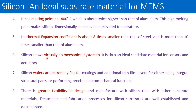Silicon also shows virtually no mechanical hysteresis, which means we can manufacture sensors and actuators reliably. Silicon wafers are extremely flat, which is ideal for coatings and additional thin film layers. If you want to add layers, structural parts, or create 3D structures on silicon wafers, you can perform a wide range of work. We can also achieve precise electromechanical functions using silicon thin wafers.